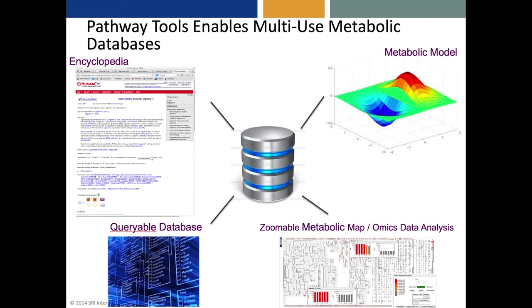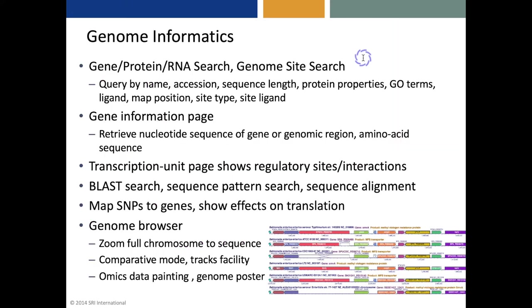Let me quickly introduce you to some important BioCyc tools that will be described more fully in later webinars. These tools are useful both for navigating the genome metabolic regulatory information space and for analyzing high-throughput datasets. BioCyc has a number of genome informatics tools, including many different searches for gene, protein, and RNA information and a genome site search.